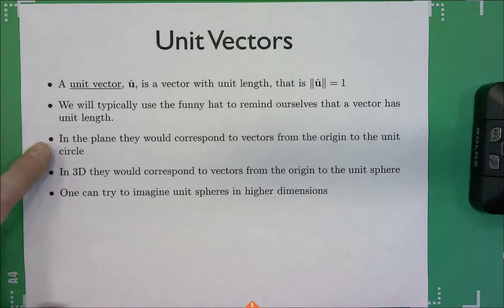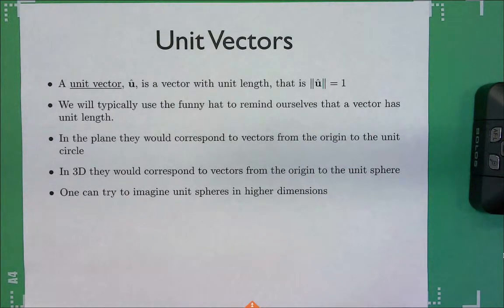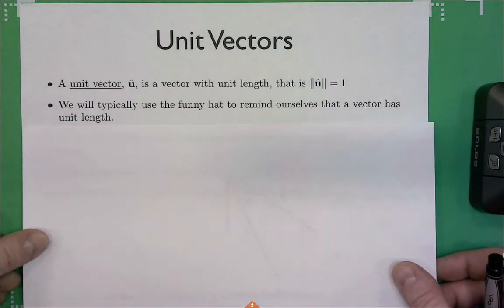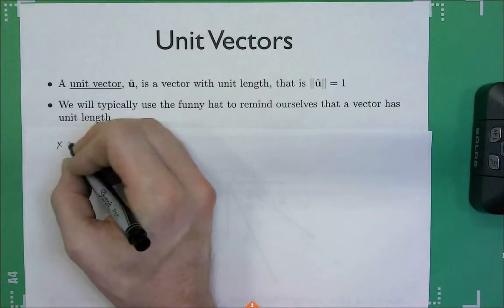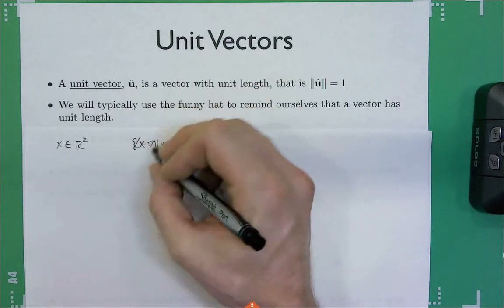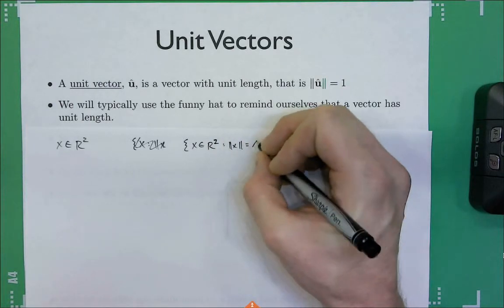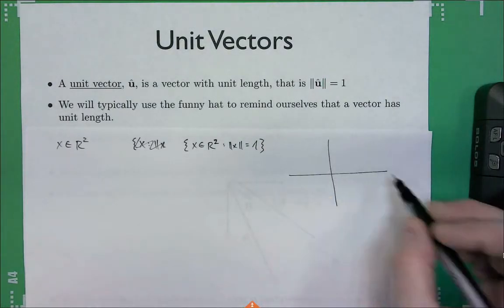Now that we have norms, we can define a unit vector — a vector that has unit length, meaning its Euclidean norm equals 1. Sometimes it's denoted with a hat. In R^2, the set of all vectors x such that ||x|| = 1 is a unit circle. In 3D it's a unit sphere.